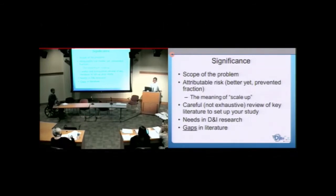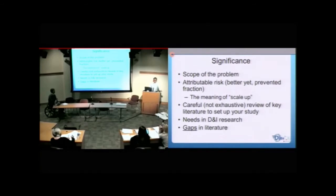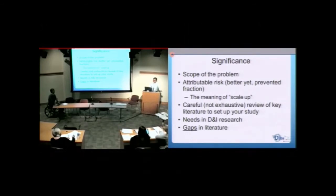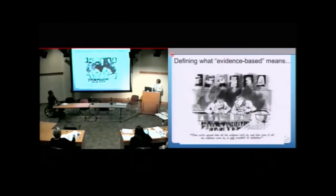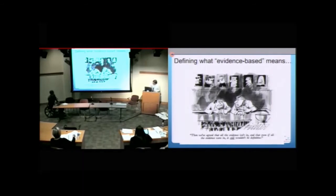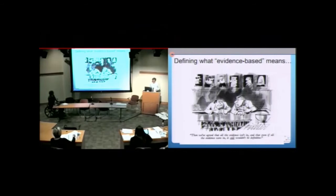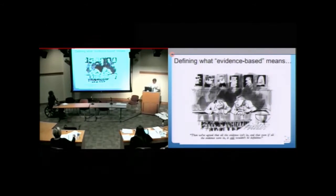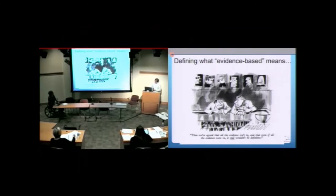I would say on almost every grant, this is where I end up cutting text out is in the significance section. Again, if it's a forced choice between methods and significance, you want to cut significance. So let me read the bottom here. Here, the notion is defining what evidence-based means. So it is a drinking game, Ross. I knew that was in there so much. But what it says at the bottom is, then we're agreed that all the evidence isn't in, and that even if all the evidence were in, it still wouldn't be definitive. So more research is needed, right?